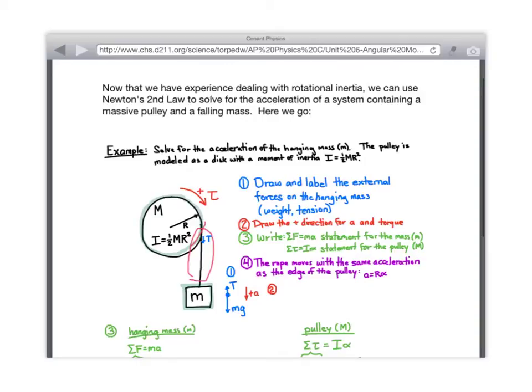Alright, so in the lab you guys just did, you had basically this setup. You had a spinning object connected to a hanging mass. And why did the object spin?